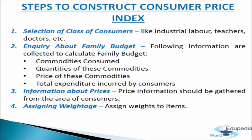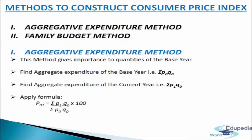These are the basic steps involved in constructing a consumer price index. There are two methods to construct consumer price index: the aggregative expenditure method and the family budget method. The aggregative expenditure method is similar to the Laspeyres method of constructing weighted index. To apply this method, the quantities of commodities consumed by the particular group in the base year are estimated and used as weights. Then the actual expenditure on each commodity for each year — base and current — are calculated.